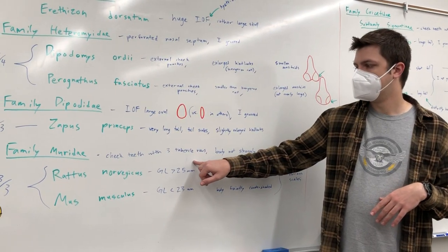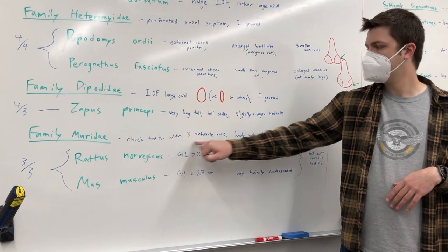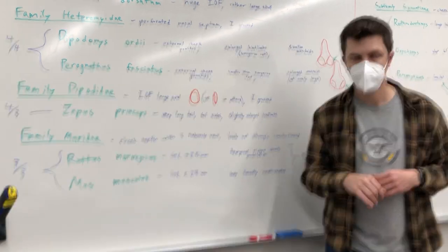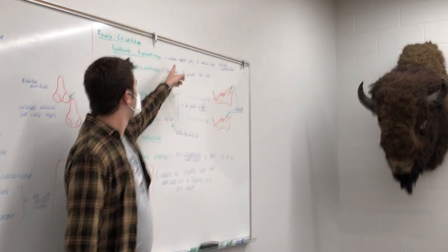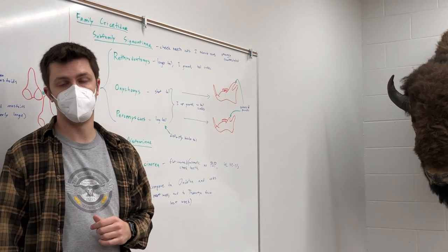But the difference here is in Muridae, the cheek teeth have three tubercle rows versus in Cricetidae, where they have two tubercle rows.